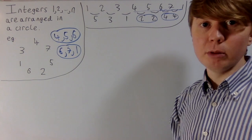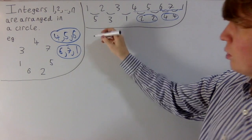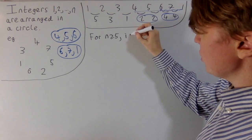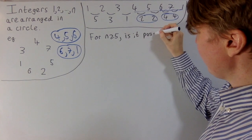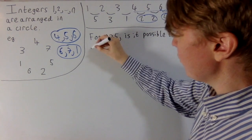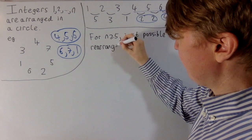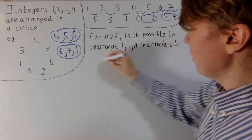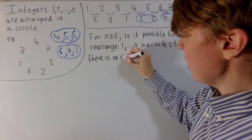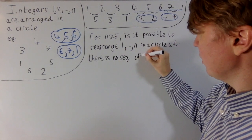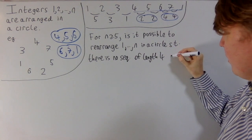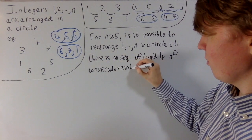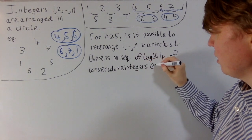Now we're ready to state the problem we're going to solve. For n greater than or equal to 5 — we're not interested in the too-small cases — we want to know: is it always possible to rearrange the integers from 1 to n in a circle such that there is no sequence of length 4 or more of consecutive integers which are equidistant from each other?